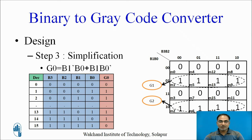For g0, after placing the minterms we have m1, m5, m9, m13 which are adjacent to each other, forming two quads. The equation gives: g0 = b1 bar·b0 + b1·b0 bar.